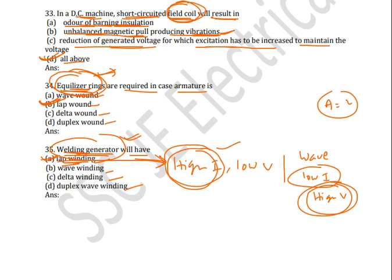One more important point regarding welding generators: due to drooping characteristics of the welding generator, we use the differentially compound generator. This is also a very important point — differentially compound generator is used in case of welding generators. Just remember this important point.